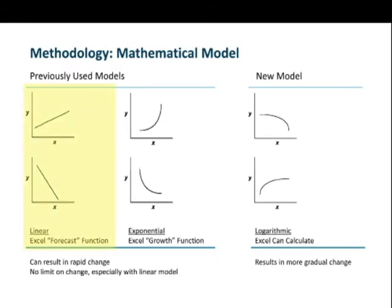In the past, the two procedures used primarily have been just a straight line — the linear function, which Excel calls the forecast function — or the exponential function, which is nonlinear. You can see on the right-hand side under the previous used models on the slide that those are curved. But they have some drawbacks for using them as population forecast tools.